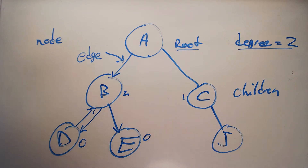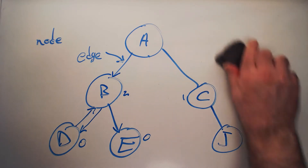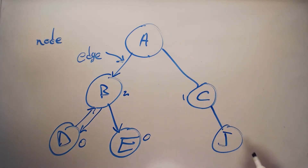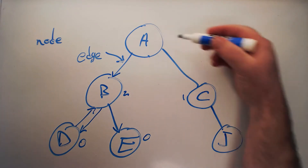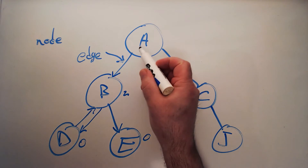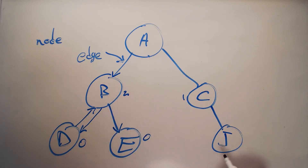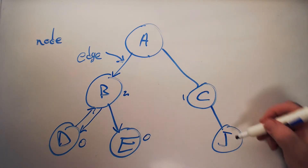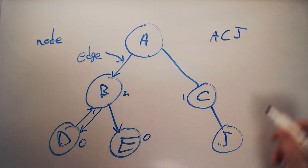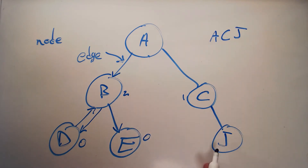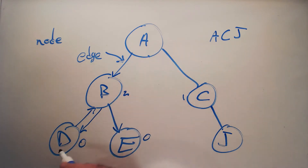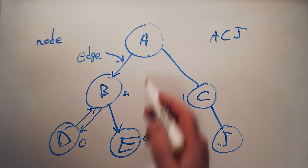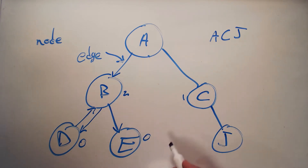Now we can talk about a path. There is one and only one path that starts at the root and ends at any given node. The path from the root to J, for example, is A, C, J. The path to E is A, B, E. The path to D is A, B, D. The path to B is A, B. The path to C is A, C.